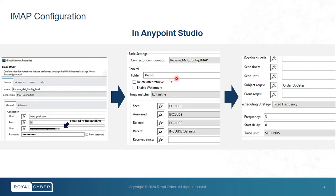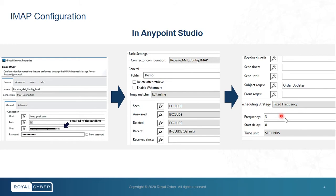Under the basic settings, mention the name of the folder which is being monitored. Add some filters to exclude emails which have already been processed, and an additional filter to only log emails with a specific subject — in my case it's 'order updates'. We are polling the mail server every three seconds.